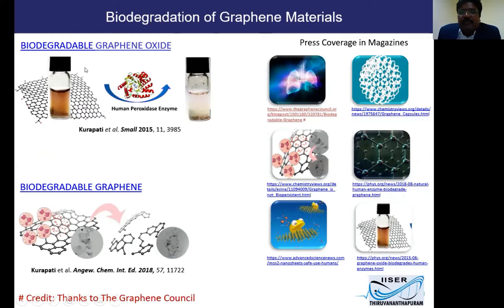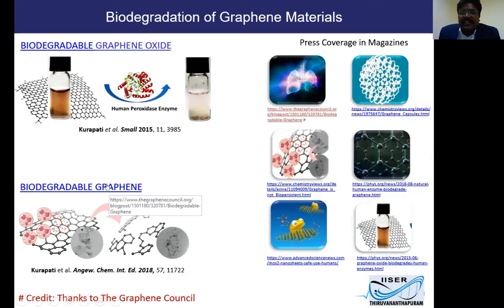We found out that graphene oxide, which is an oxidized form of graphene, can be degraded when dispersed in aqueous media by a human enzyme called myeloperoxidase, extracted from the blood. Later we also found that crystalline graphene — not graphene oxide, not reduced graphene oxide — can also be partially degraded by the same enzyme, myeloperoxidase, from white blood cells.